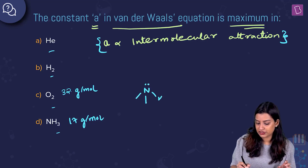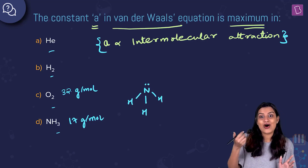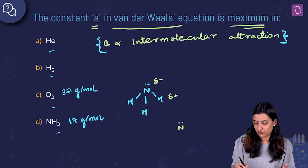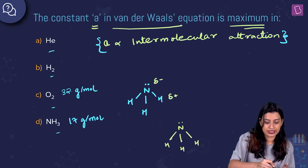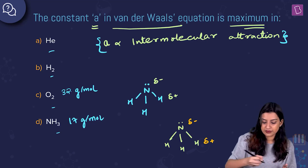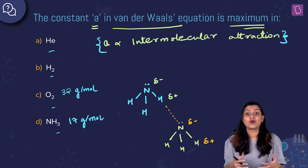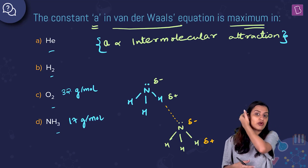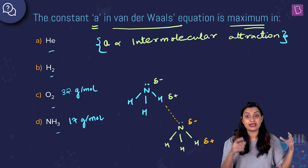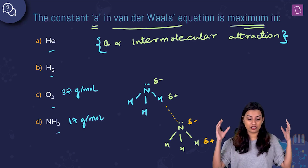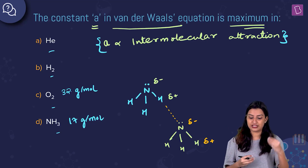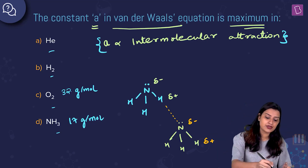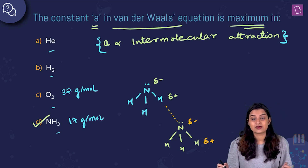In ammonia, nitrogen is highly electronegative and attached to hydrogen, creating a δ+ on hydrogen and δ− on nitrogen. This allows hydrogen bonds to form between adjacent NH₃ molecules. Because of this strong intermolecular hydrogen bonding, NH₃ has greater intermolecular attraction than O₂, and hence the maximum value of van der Waals constant 'a'. So option D, NH₃, is the correct answer.